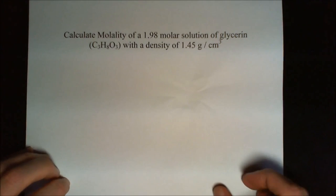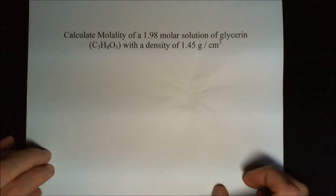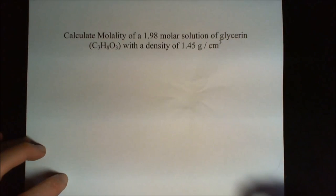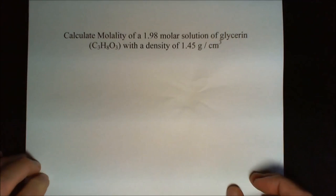All right, so we're going to calculate the molality of a 1.98 molar solution of glycerin, C3H8O3, with a density of 1.45 grams per centimeter cubed.